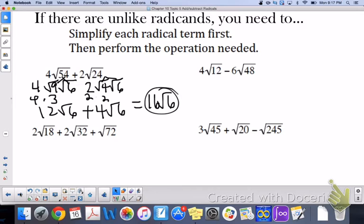The next one with 12 and 48. So 12, perfect square that goes into 12 is 4. So square root of 4 is 2. We have 4 times 2, which is 8 root 3.